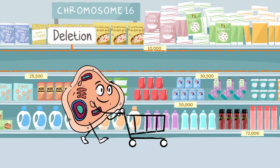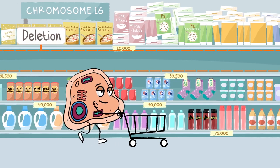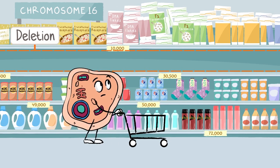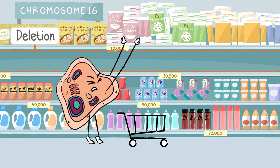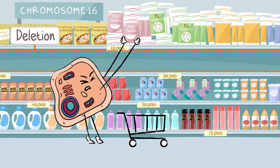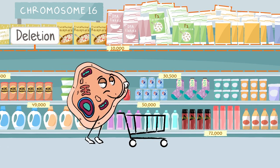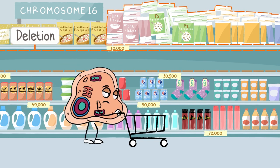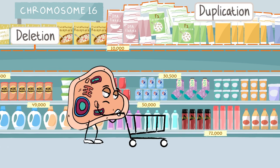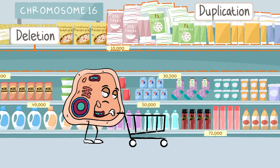In other areas the shelves can be overstocked, making the products difficult to get off the shelf. These overstocked sections are called chromosome duplications.